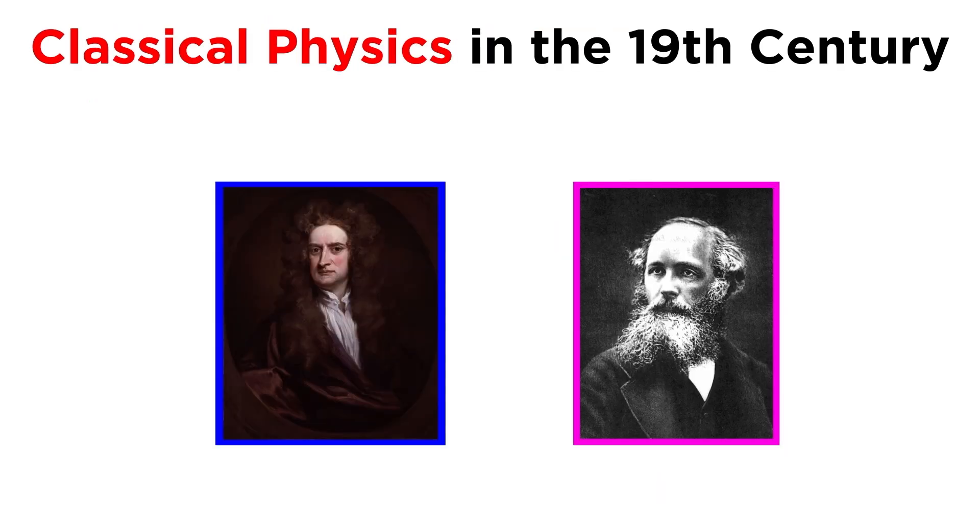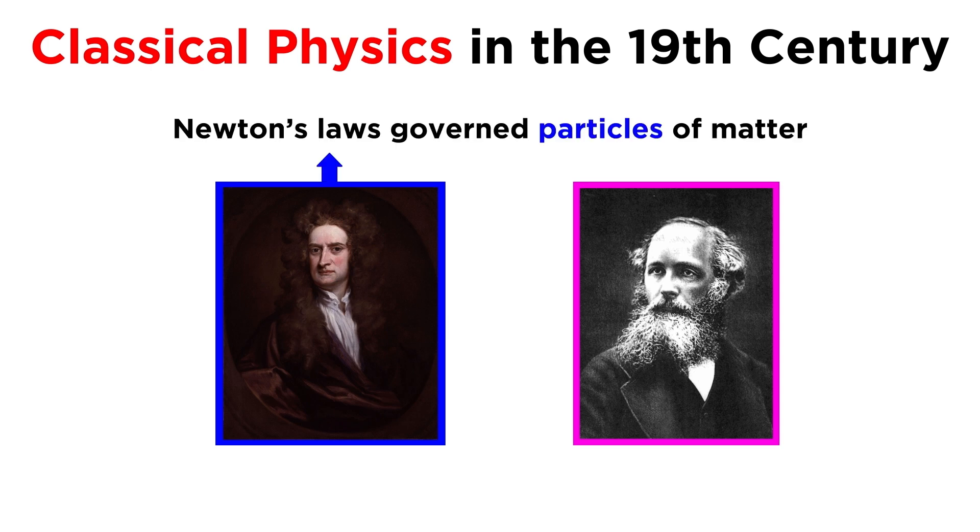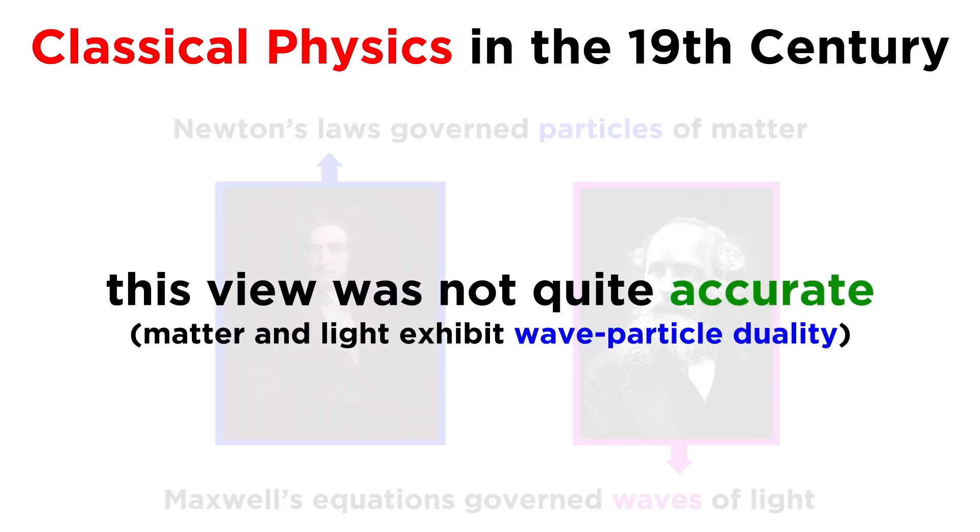So at that particular time in physics, we viewed the universe as consisting of particles of matter governed by Newton's laws of motion, and waves of light governed by Maxwell's equations. As it turned out, this view was incorrect, and in reality, both matter and light have to be described using wave-particle duality.